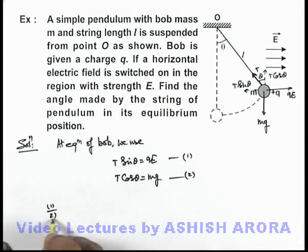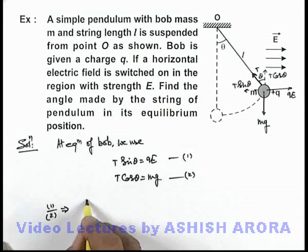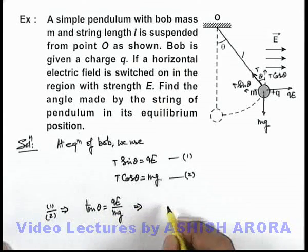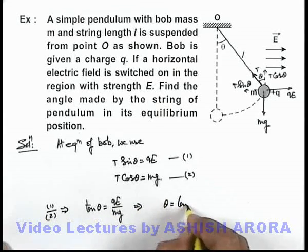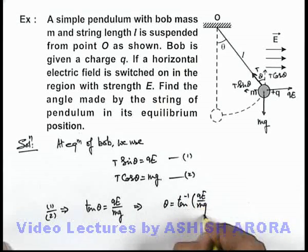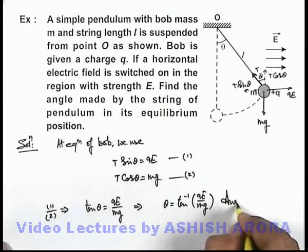Which will result in tan theta equals qE by mg. This implies the angle made by the string with the vertical is given by tan inverse of qE by mg. That will be the answer to this problem.